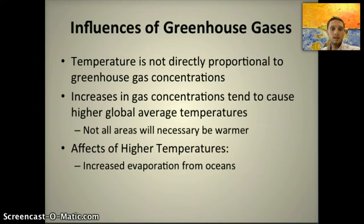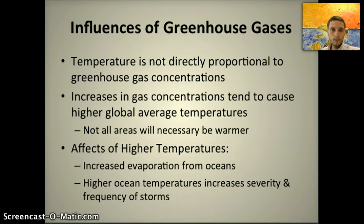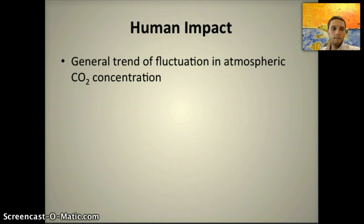Higher temperatures are going to have some major effects: increased evaporation from the oceans, higher ocean temperatures increasing the severity and frequency of storms. We've seen that recently with various hurricanes affecting the East Coast, New Orleans some years ago, and most recently North Carolina receiving extreme amounts of rain. The general trend in atmospheric carbon dioxide has fluctuated as low as 188 parts per million, with warm periods as high as 300 parts per million.